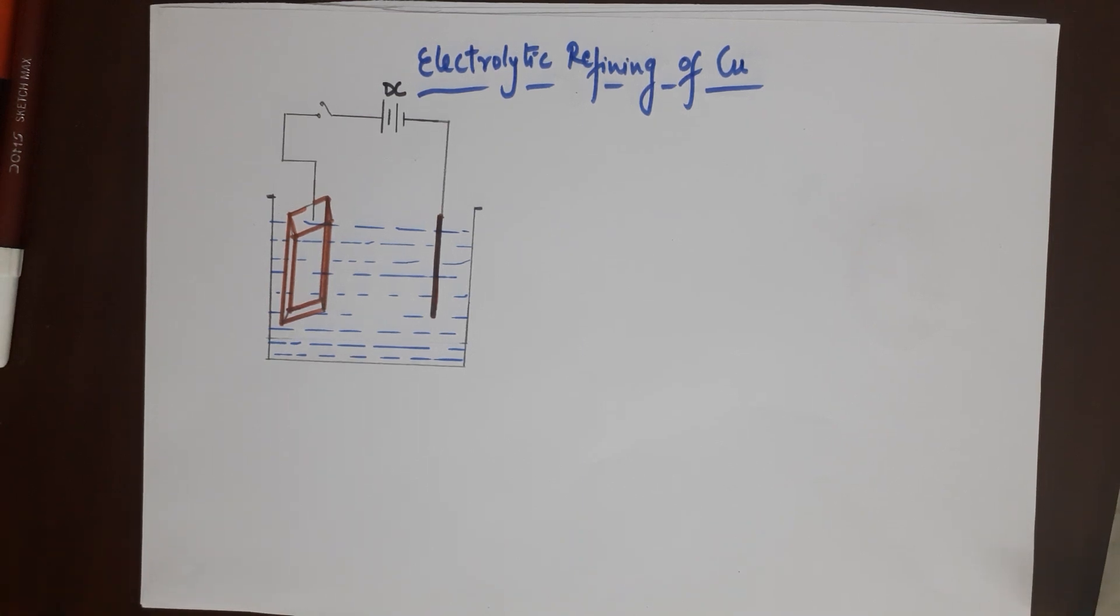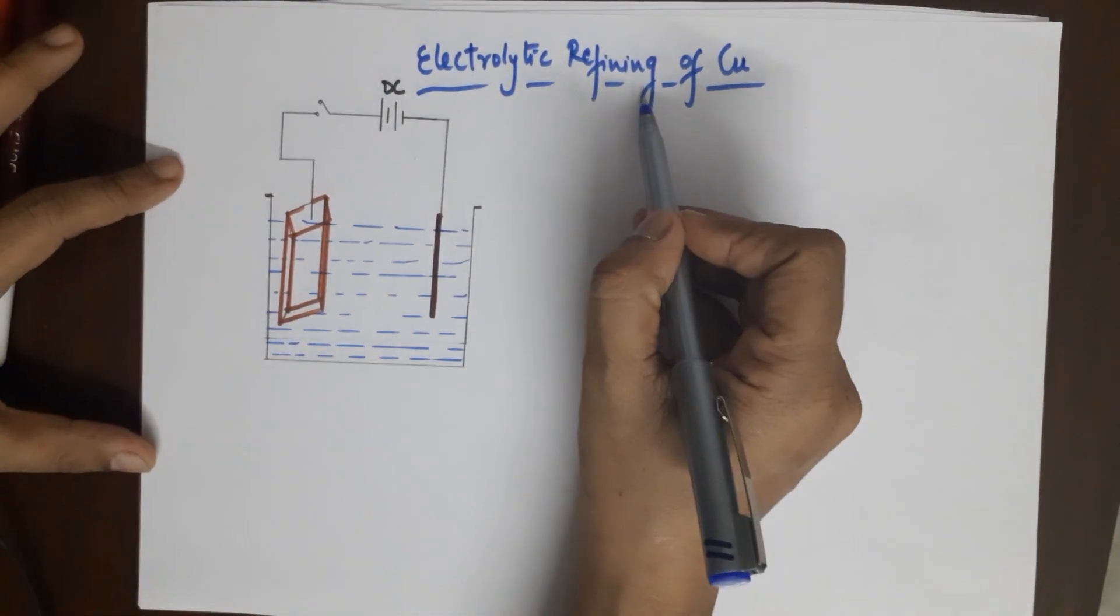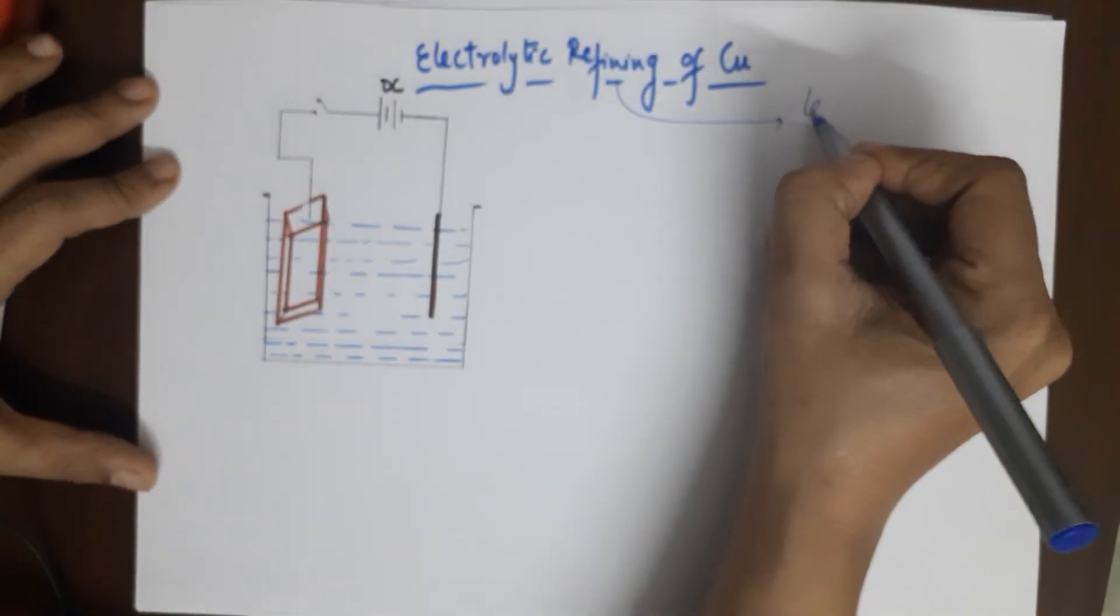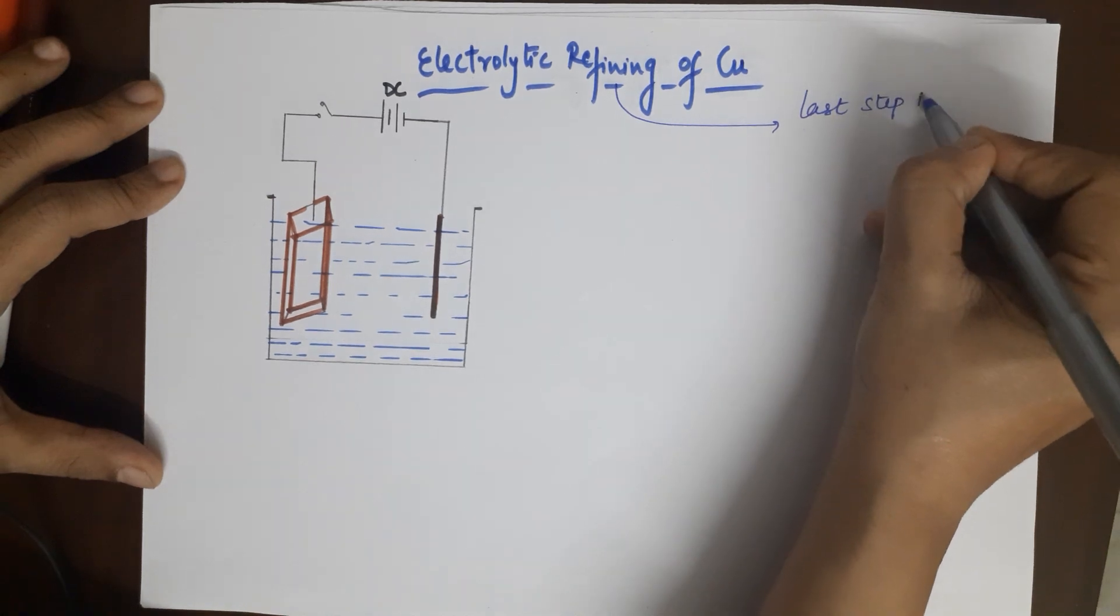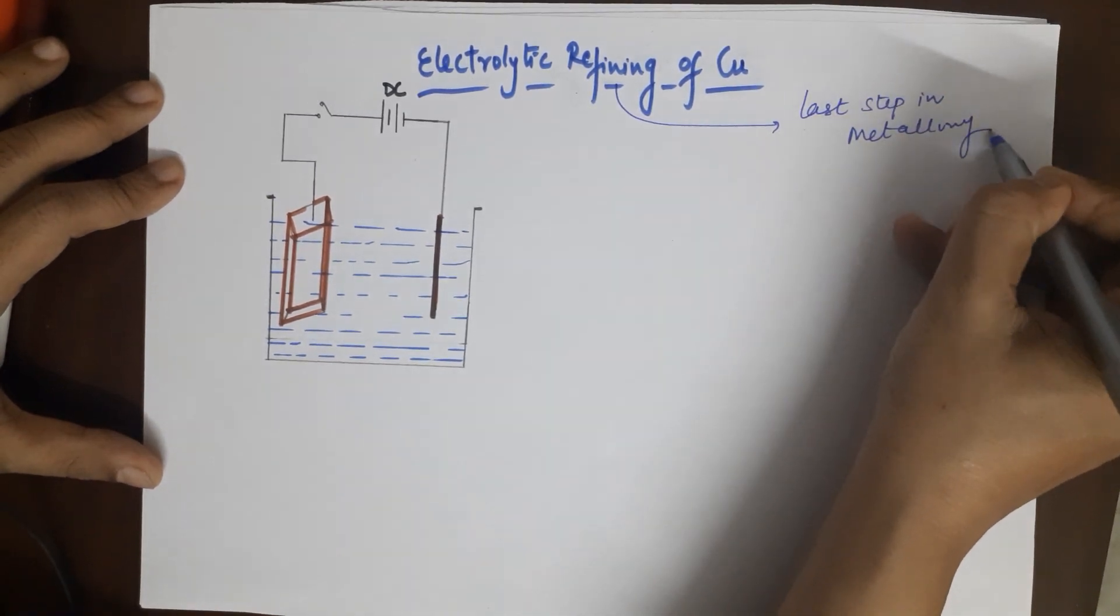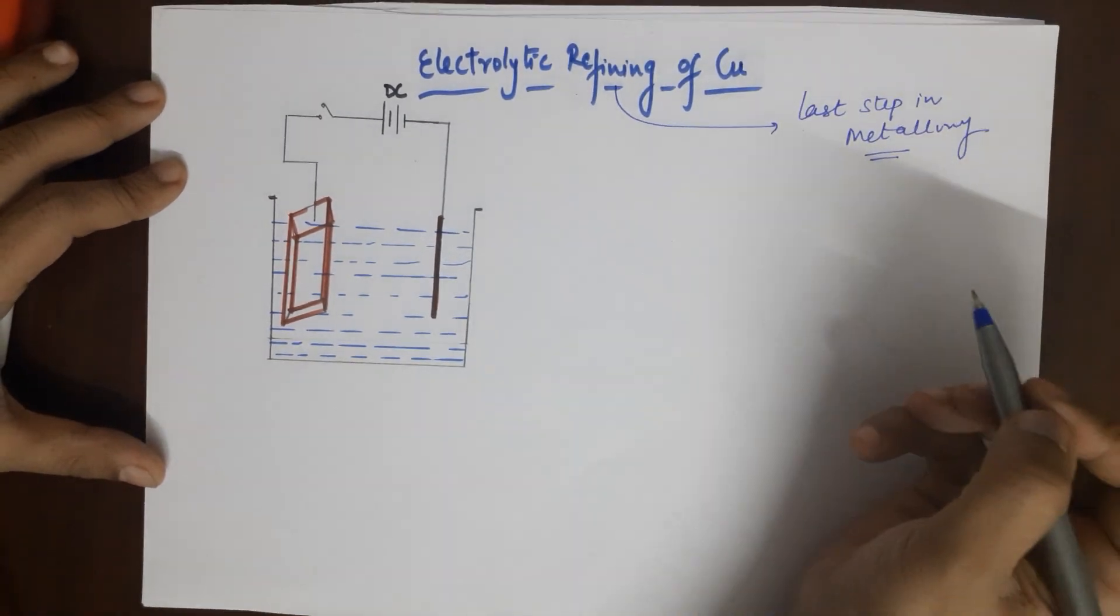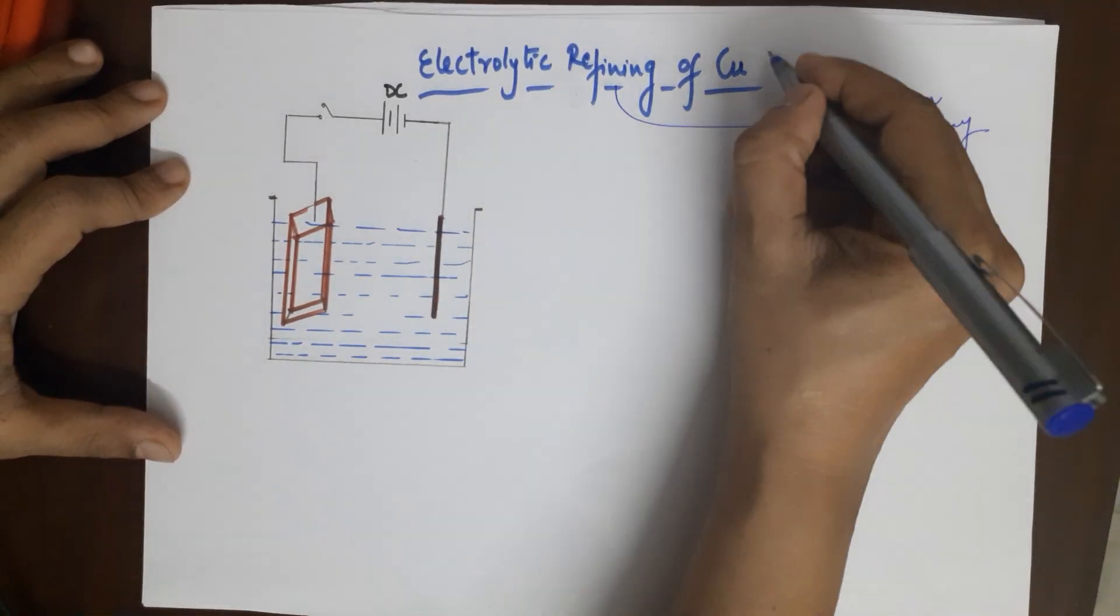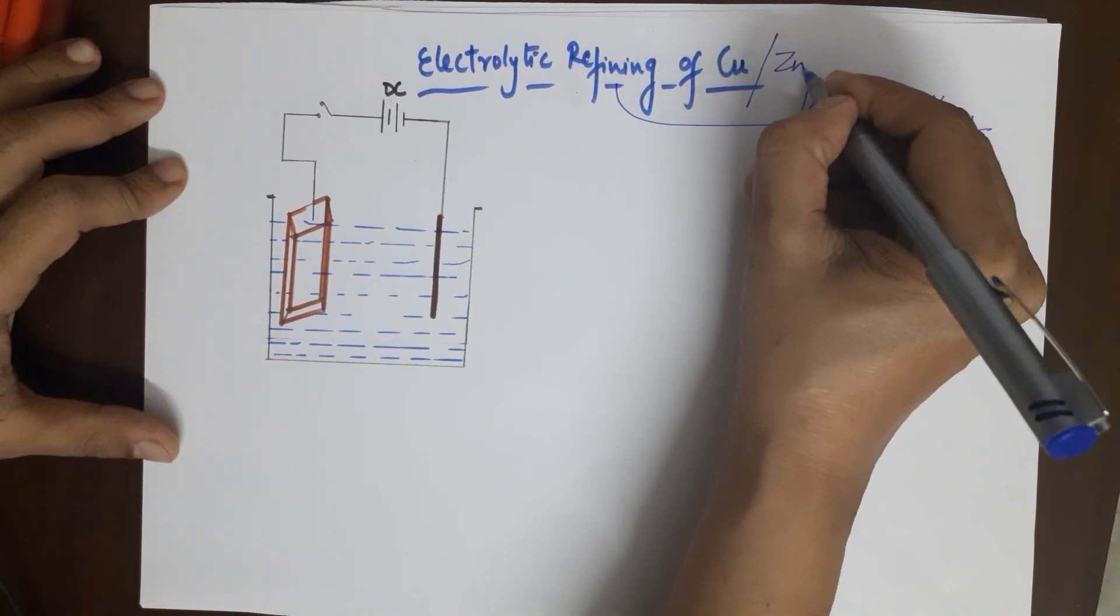Very good morning students. Today's class, the topic we are doing is electrolytic refining of copper. This refining is the last step in metallurgy when you're wanting to extract a metal. The last step where you get a pure metal is refining. This particular method can also be used for zinc.